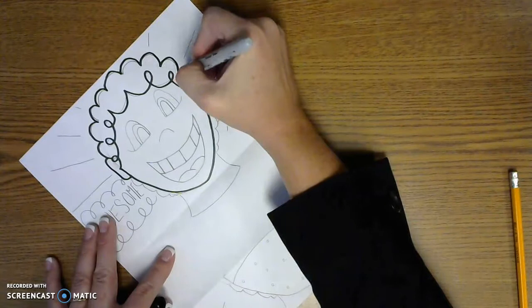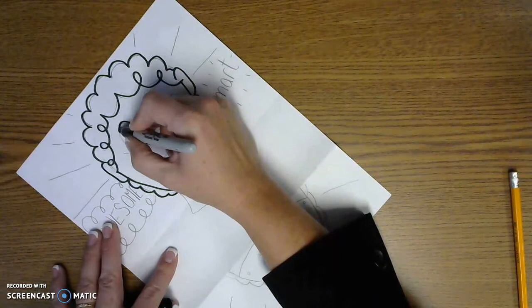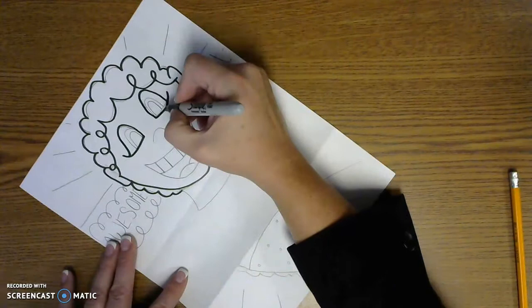And then I want you to color it in all of your beautiful colors. Make sure that you color the hair the right color. Mrs. Feek has red hair. I have red hair. And I have green eyes.